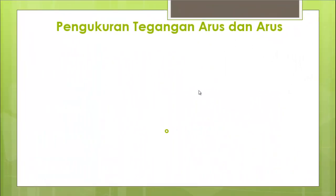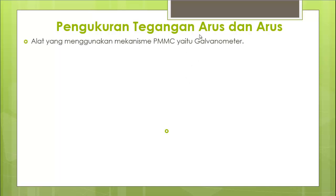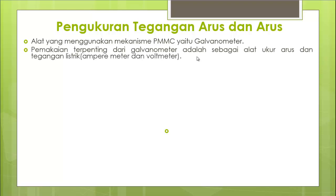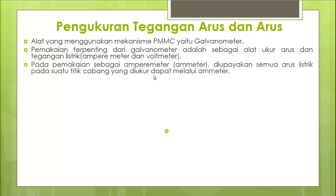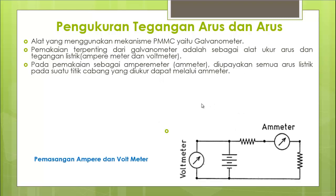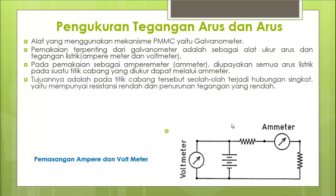Yang pertama adalah pengukur arus. Alat yang menggunakan mekanisme PMMC disebut sebagai galvanometer. Pemakaian terpenting dari galvanometer adalah sebagai alat ukur arus dan tegangan, atau biasa disebut ammeter atau voltmeter. Pada pemakaian ammeter, semua arus listrik pada satu titik cabang diukur melalui ammeter yang diposisikan secara seri dari rangkaian yang akan diukur. Tujuannya agar pada titik cabang tersebut seolah-olah terjadi hubung singkat, yaitu mempunyai resistansi rendah dan penurunan tegangan yang rendah.